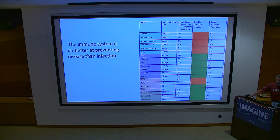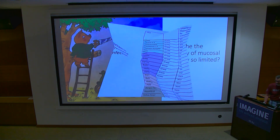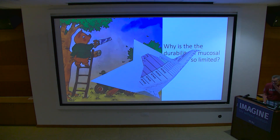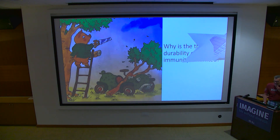Antibodies work really well in the blood, in the tissues, in the lymph — they don't work well on surfaces, they don't work well on the mucosa. So why is the durability of mucosal immunity so limited? I think this is a really interesting question.